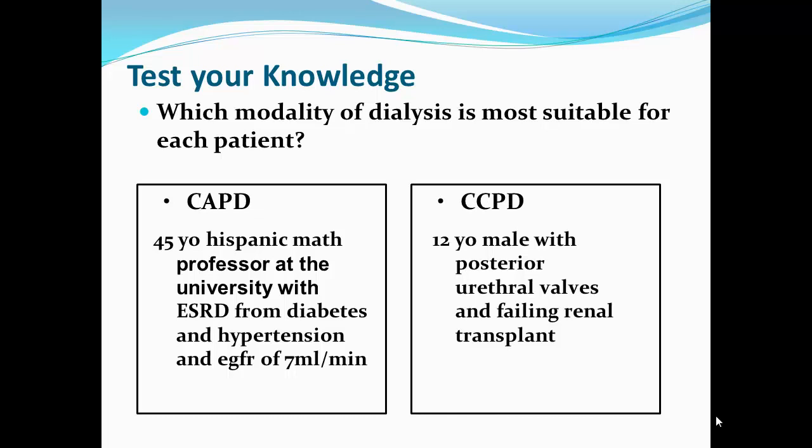For a 12-year-old with posterior urethral valves and a failing kidney transplant: PD is preferred for kids because we're usually using dialysis as a bridge to transplantation. Mortality is a little higher with hemodialysis for young patients. Young patients also tend to have more rapid transport characteristics but do well on automated PD modalities, and they better maintain residual renal function — important for adolescents who may not comply well with fluid and dietary restrictions. CCPD is a great modality because parents can manage it at nighttime, leave the patient with a fill, the patient can go to school, and parents can go to work.